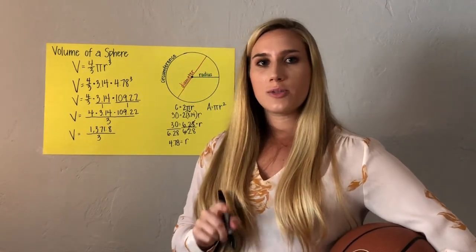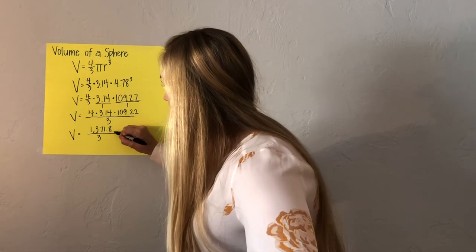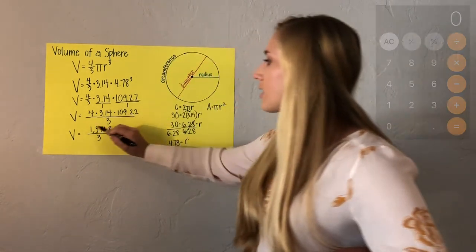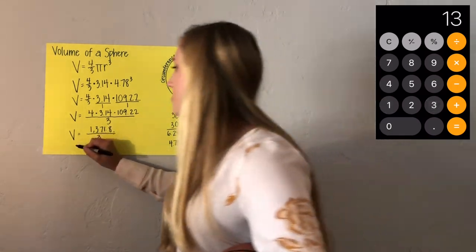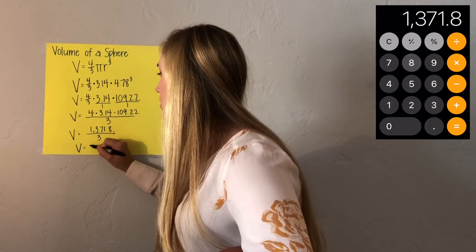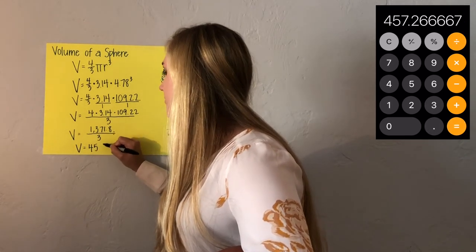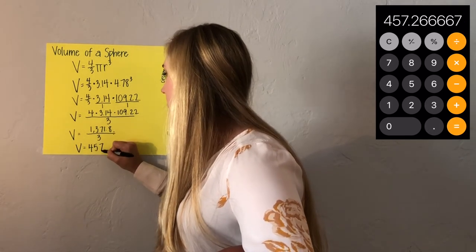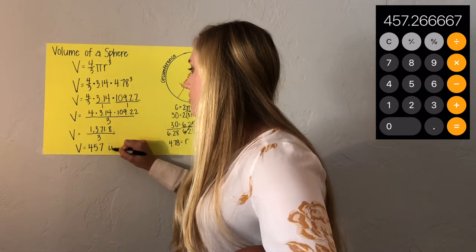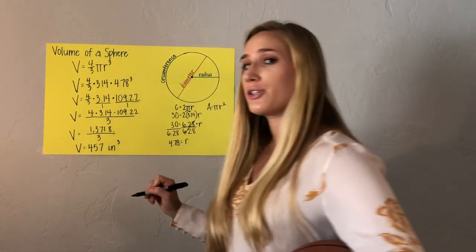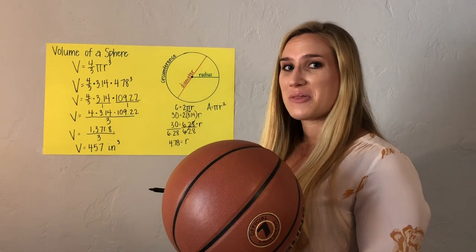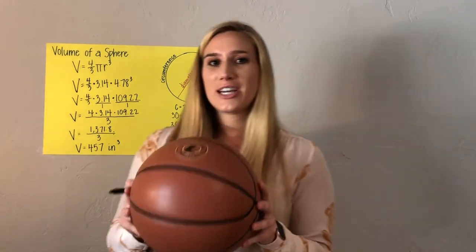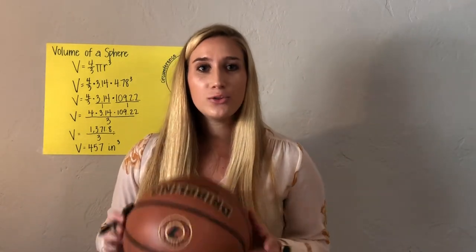My denominator stays the same at 3. A fraction bar always tells me to divide, so 1,371.8 divided by 3 gives me my final volume — 457 inches cubed. I know it's cubed because I just calculated the volume of my basketball. My challenge for you now is to find a ball at home and see if you can use the circumference to calculate the volume of that sphere.